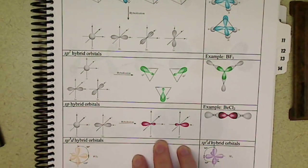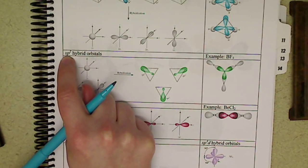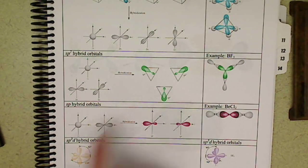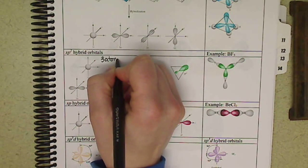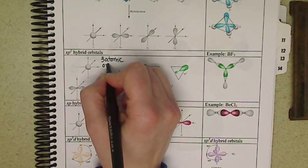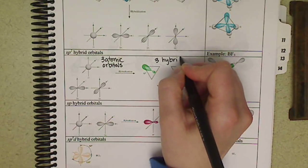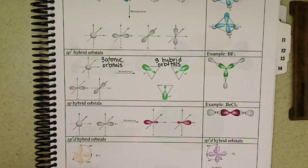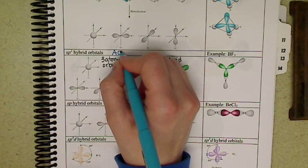If we look at our SP2 hybrid orbitals, we have three total orbitals, we start with three atomic orbitals, we hybridize and get three hybrid orbitals. So three atomic orbitals, we have three areas of electrons where overlap can occur. Three areas of electrons corresponds to trigonal planar.